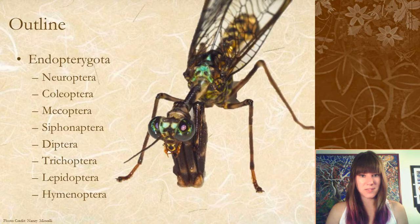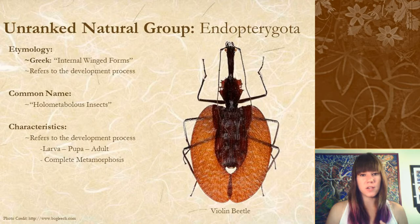Endopterygota is an unranked natural group right now. In Greek, endopterygota means 'internal winged form,' and it's referring to that developmental process of the pupal stage in between the larval and adult stage.